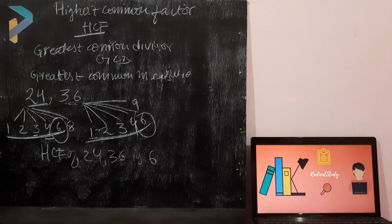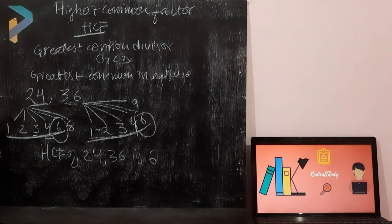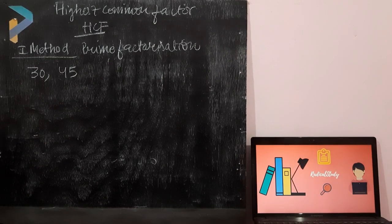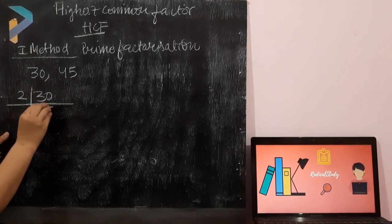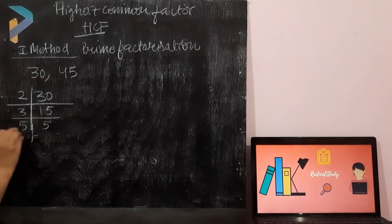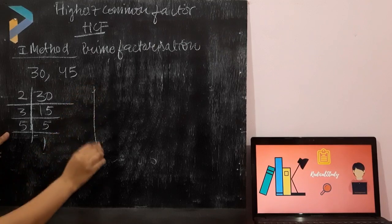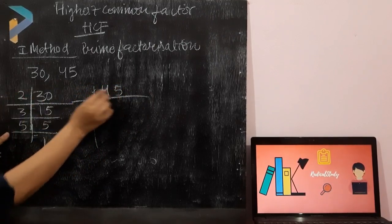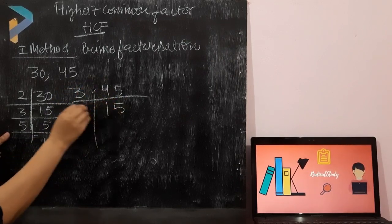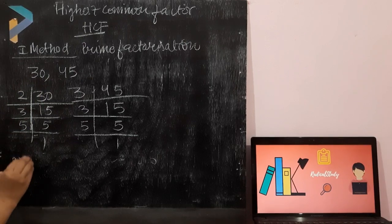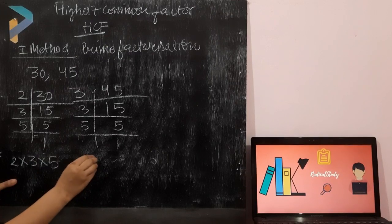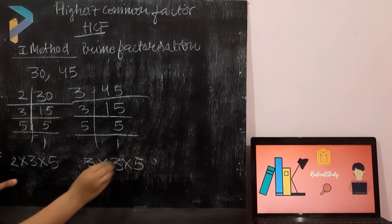There are many methods to find out the HCF. First I'll proceed by the prime factorization method. Let's take the example of 30 and 45. The prime factorization of 30 is 2 × 3 × 5. For 45, it is not divisible by 2, so we proceed with 3: 3 × 3 × 5. So the prime factorization of 45 is 3 × 3 × 5.